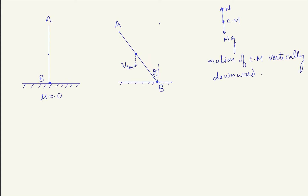To find the instantaneous center of rotation: if you know the velocities of any two points of a rigid body, then draw perpendiculars to those two velocities — the point where those perpendiculars intersect is called the instantaneous center of rotation. Here, the velocity of point B is in the horizontal direction, and the velocity of center of mass is in the vertically downward direction. Drawing perpendiculars to Vb and Vcm, the point where they intersect becomes the ICOR.